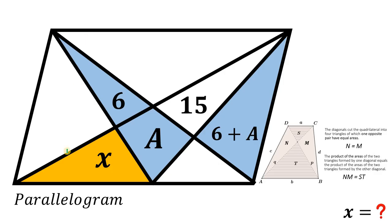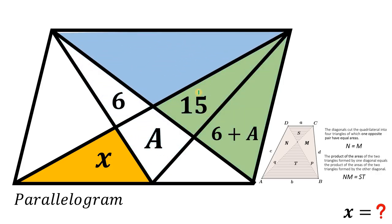Next, since we have a parallelogram cut by two diagonals, the parallelogram is divided into four triangles of equal area. So the green triangle has area 15 plus 6 plus a, which equals 21 plus a, and the blue triangle is also 21 plus a.